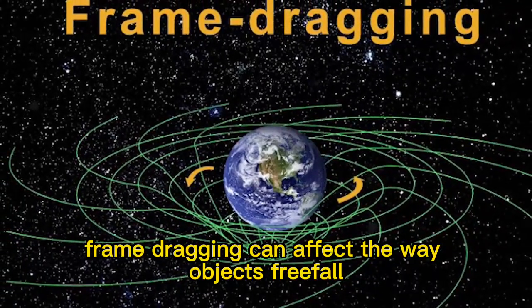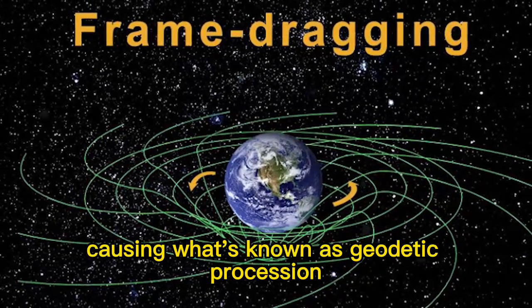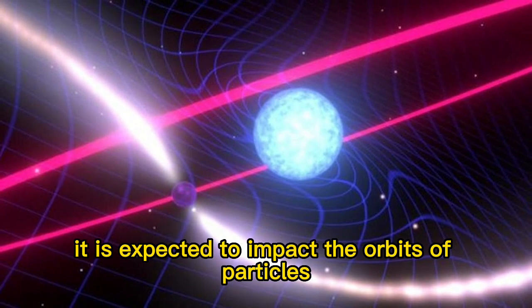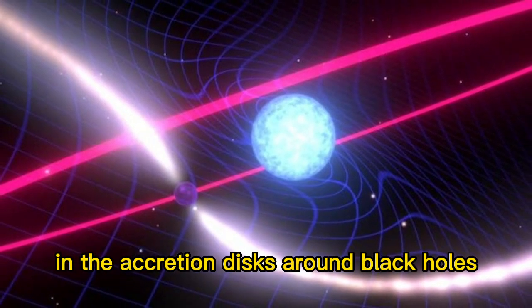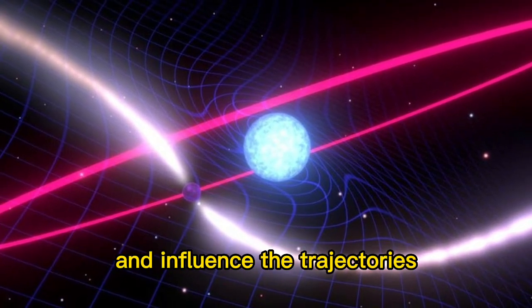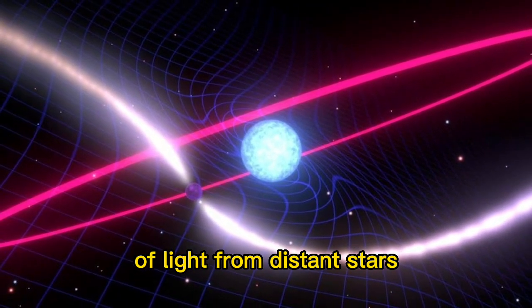Frame dragging can affect the way objects freefall around a rotating body, causing geodetic precession. It is expected to impact the orbits of particles in accretion disks around black holes, potentially creating observable effects in the light emitted by these particles and influencing the trajectories of light from distant stars,